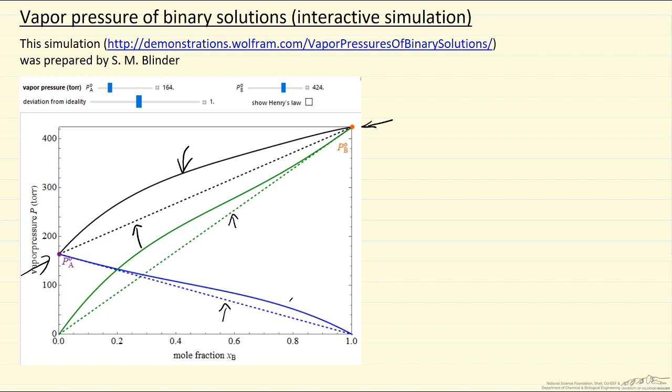Each of the contributions are shown here. These curves correspond to the pressure B contributes to the overall, which is the mole fraction of B, the activity coefficient of B in the mixture, and the saturation pressure of B.